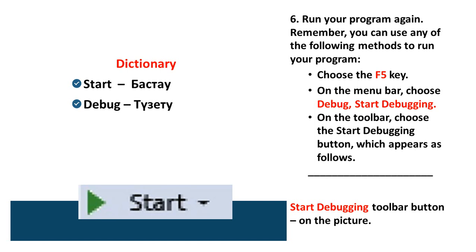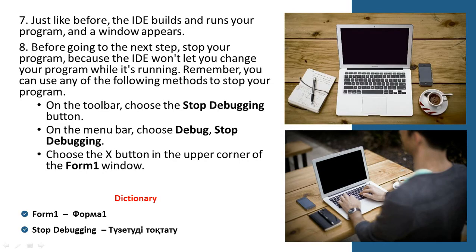Sixth step: run your program again. Remember you can use any of the following methods to run your program. First method: choose the F5 key. Second method: on the menu bar, choose Debug, Start Debugging. Third method: on the toolbar, choose the Start Debugging button.